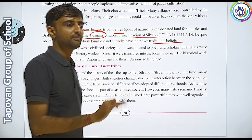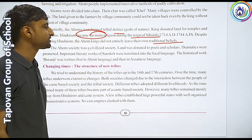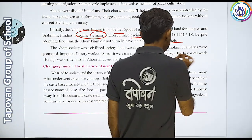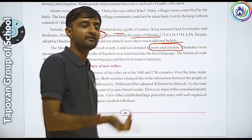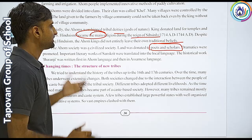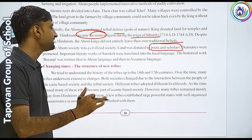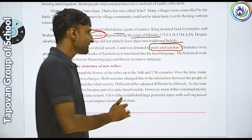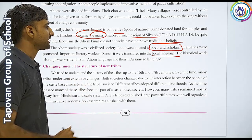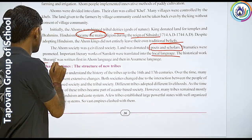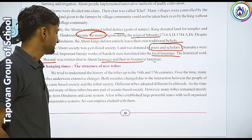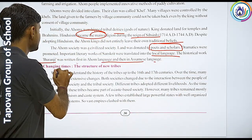Ahom society was a civilized society and land was donated to scholars. Dramatic arts were promoted. Important literary works in Sanskrit were translated into local languages. The historical chronicles called Buranjis were written first in the Ahom language and later in the Assamese language.